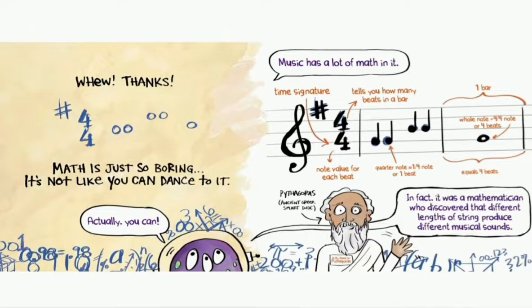Math is just so boring, it's not like you can dance to it. Actually, you can. Music has a lot of math in it. Time signature tells you how many beats in a bar. One bar. Note value for each beat. Quarter note, one-fourth note, or one beat equals four beats. Wow, this is a lot of wonderful math.